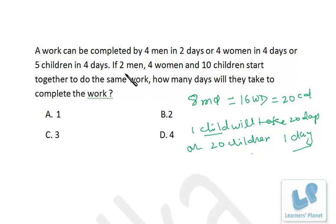Now here, what we can do - we are asked about 2 men plus 4 women plus 10 children, all of them together involved in doing this work. So what I do is I convert men and women to children.